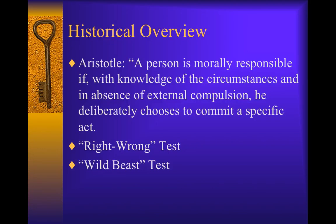There have been various insanity tests over time, one of the first being the right-wrong test. Under Roman law, if a child or an insane person committed homicide, he or she was not held accountable because 'the one is excused by the innocence of his intentions, the other by the fact of his misfortune.' In Britain during the 18th century, children less than age 7 were not held responsible and children over 14 were held responsible for their crimes. In order to convict children between 7 and 14, the facts must establish that the defendant could discern between good and evil. The right-wrong test serves as a precursor to later insanity statutes that include the element that the person is so mentally ill that they do not know that what they are doing is wrong.